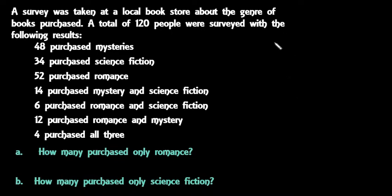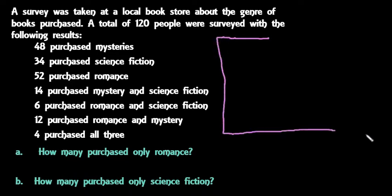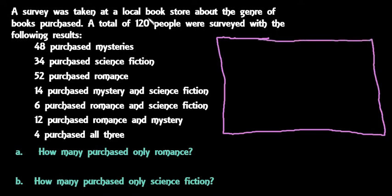We want to draw a rectangle to represent the entire set of customers that purchased books at this bookstore — so 120 people need to be contained inside. We want to draw a circle for each category. I'm going to go in the order I have them drawn on my paper, just to make it easier, but it really doesn't matter as long as you label them.